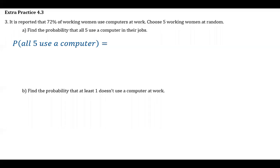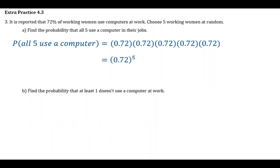Each one of them is going to have a 72% chance of being a working woman who uses a computer at work. So it's just going to be 0.72 times 0.72 times 0.72 times 0.72 — 0.72 for each one of the five working women. If you want to write that more compactly, you can write it as 0.72 to the fifth power, and then just calculate that. That comes out to 0.193.